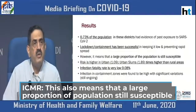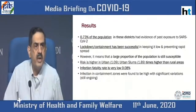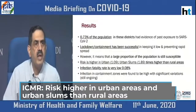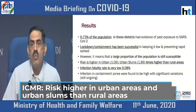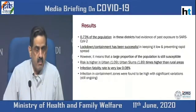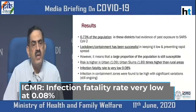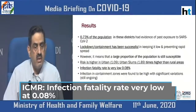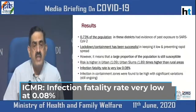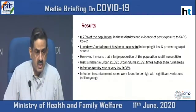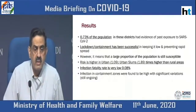Risk was slightly higher in urban areas at 1.09 compared to rural areas, and it was higher in urban slums, nearly 1.89 times higher than rural areas. The good news is that the infection fatality rate was very low at 0.08% based on these 26,000 individuals in the population.